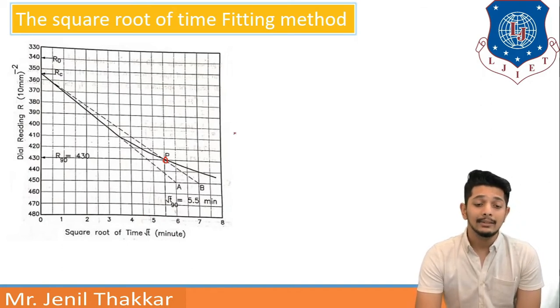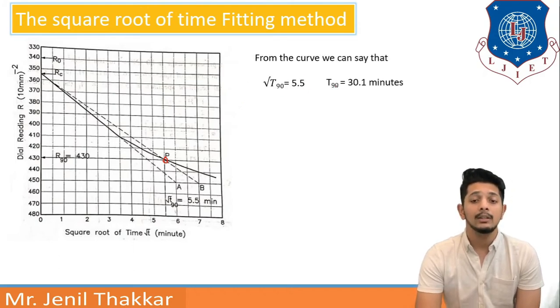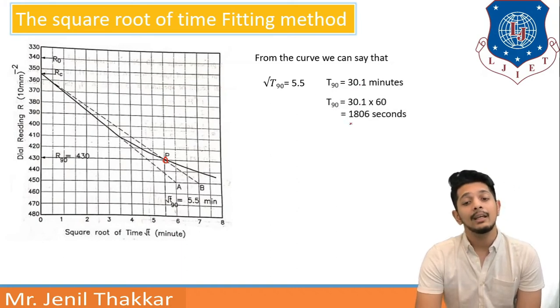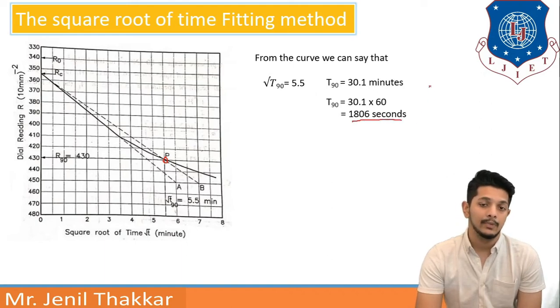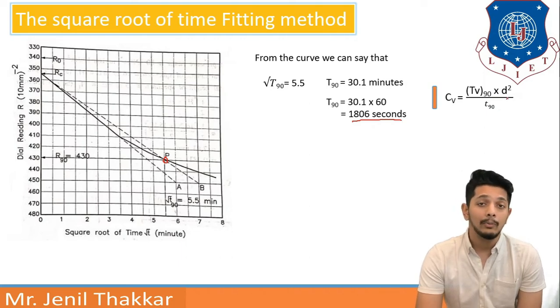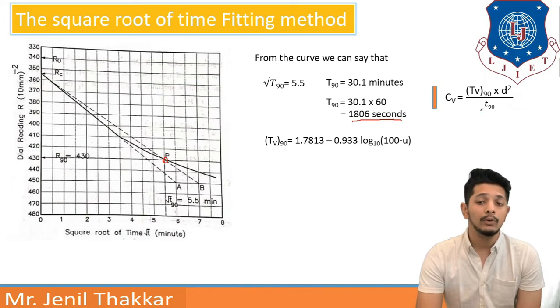Now as having these values we can calculate that under root t90 is 5.5 minutes then t90 is equal to 30.1 minutes as well as t90 can be called as 1806 seconds. From that we can remember that cv is equal to tv90 into d square by t90. This is again older formula from Terzaghi's theory. Let us move forward.